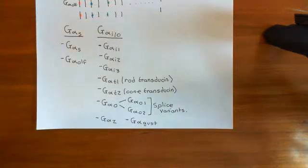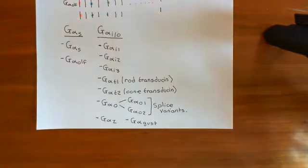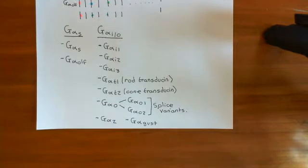Welcome back to this next video in which we are discussing heterotrimeric G proteins. We've discussed that heterotrimeric G proteins consist of three separate protein subunits: an alpha subunit, a beta subunit, and a gamma subunit.